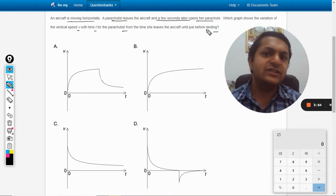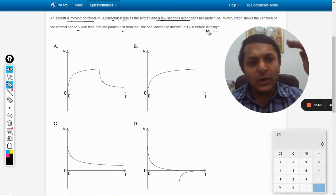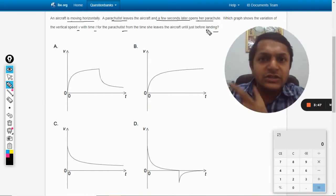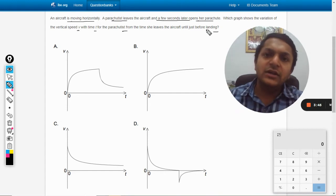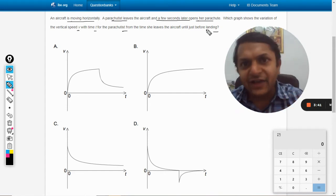Acceleration due to gravity will take place and velocity is bound to increase. Once the velocity increases, and because the air drag is not neglected, after some time the drag force will become equal and opposite to weight.